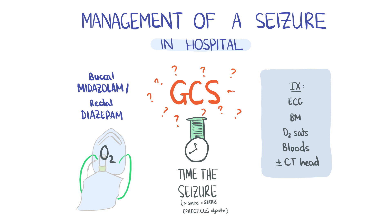If the cause of the seizure is unknown, it's necessary to do some investigations such as an ECG, blood glucose, oxygen saturations, and bloods like FBC, U&Es, calcium levels and LFTs. If the patient is pyrexic then think about blood cultures, an ABG, and potentially a tox screen as well. Also consider doing a CT head if you're uncertain about head injury or if there's clinical suspicion of underlying structural abnormalities.